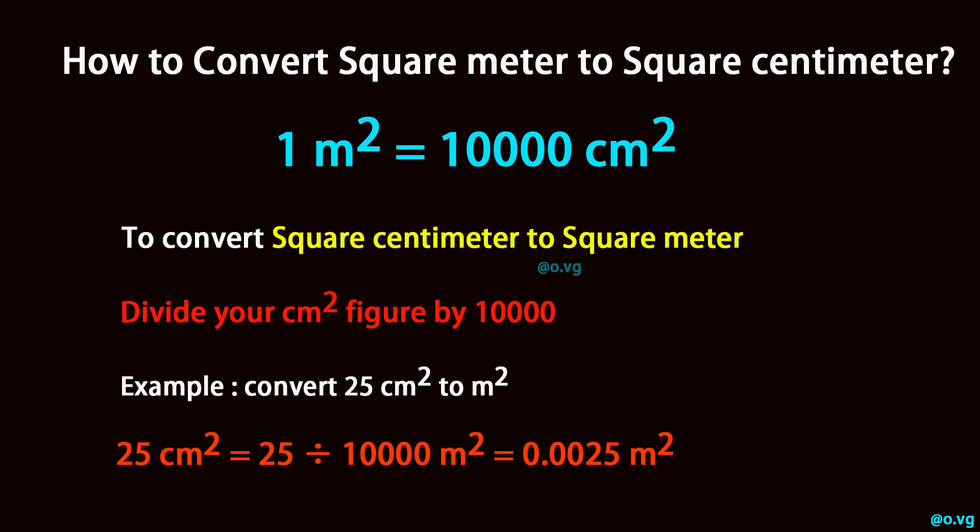Convert 25 square centimeter to square meter. 25 square centimeter equals 25 divided by 10,000 square meter, which equals 0.0025 square meter.